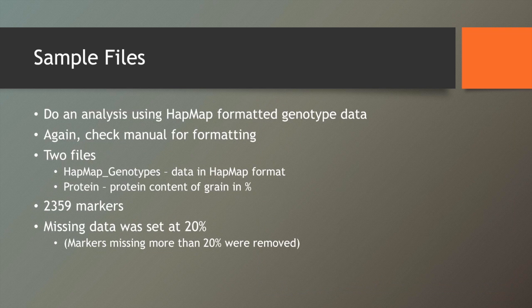The genotype data in the sample files is in HapMap format, which is becoming a quite common format. Check the manual because there are a lot of other options as well. The two files that are available are the genotypes in HapMap format and the protein content of the grain in percentage. The number of markers being used is 2,159, filtered on missing data set at 20% and a minor allele frequency of 1%.